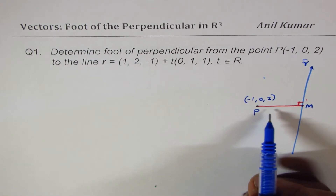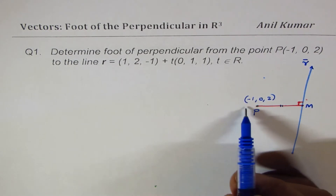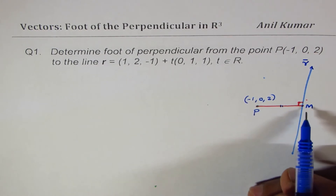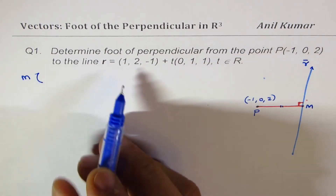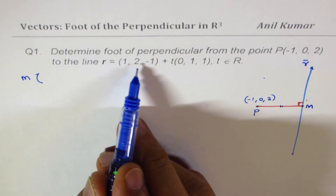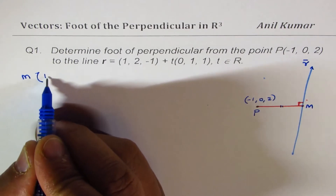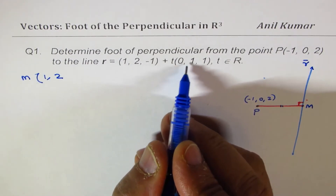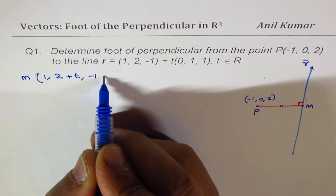The foot of the perpendicular means these two lines are at a right angle, so the dot product will be zero. A general point M on the line can be written from the equation, so the x-value will be 1 plus 0·t, which is just 1. The y-value will be 2 plus t, and z will be minus 1 plus t.